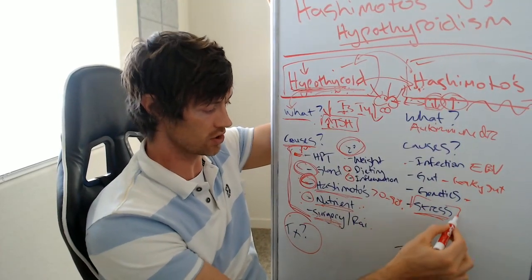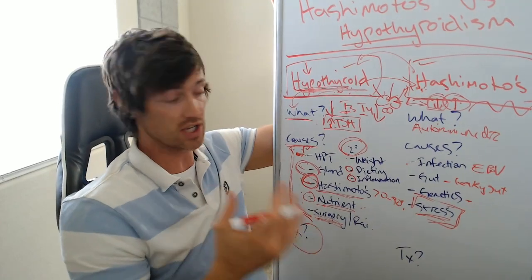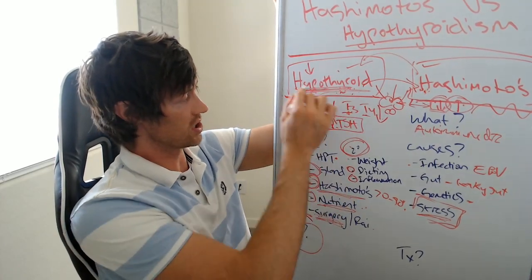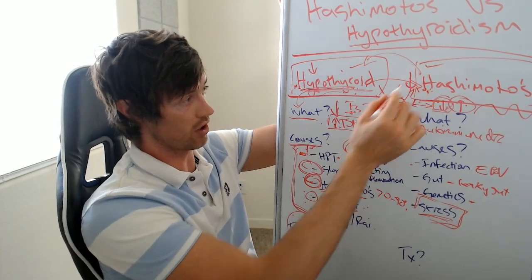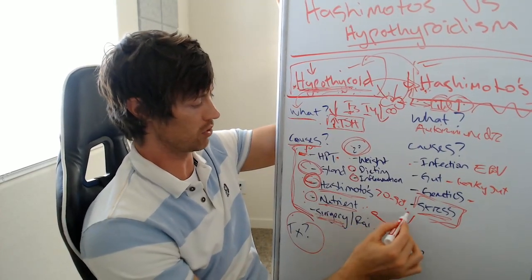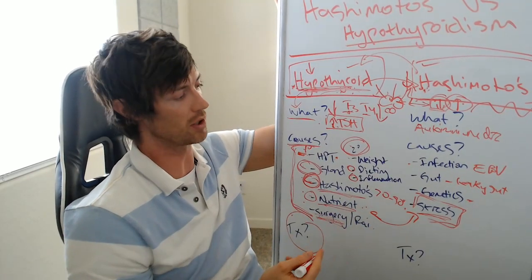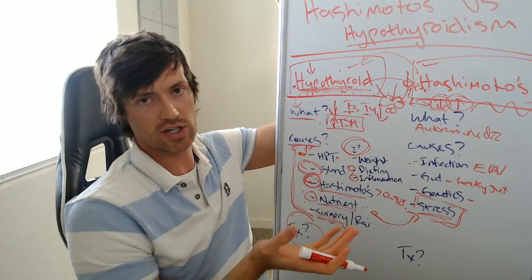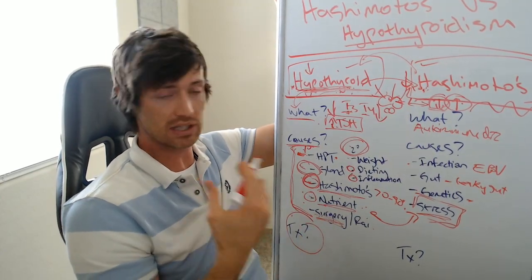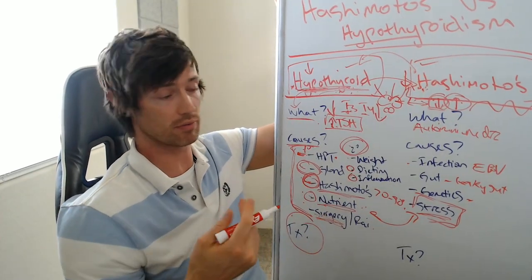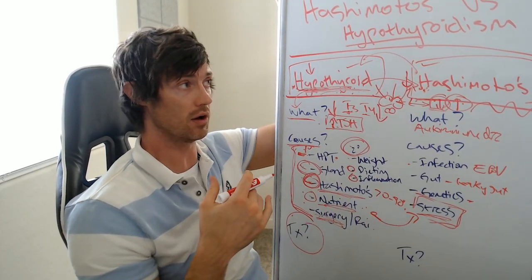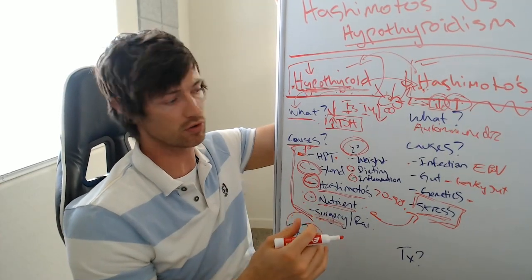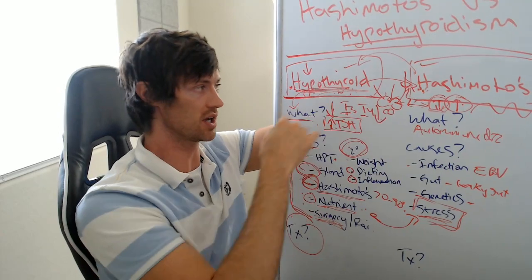One of the bigger causes is also stress — stress from any cause. Stress can impact your HPT axis, which can cause low thyroid, and stress can also impact your immune system, which can trigger Hashimoto's. I see a lot of women who have had Hashimoto's triggered by things like deaths in their family or divorces. Events that are incredibly stressful in your life can trigger this whole process and cause Hashimoto's, which can then cause hypothyroidism.